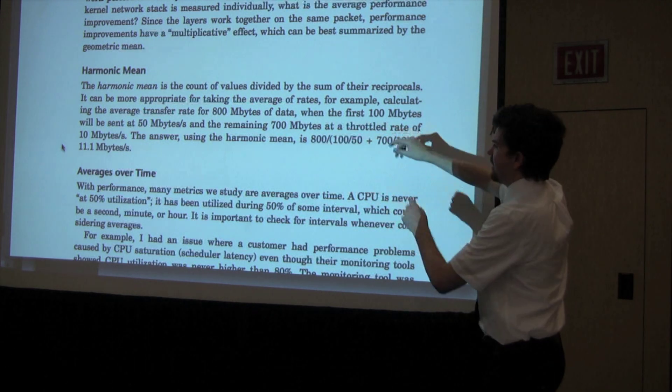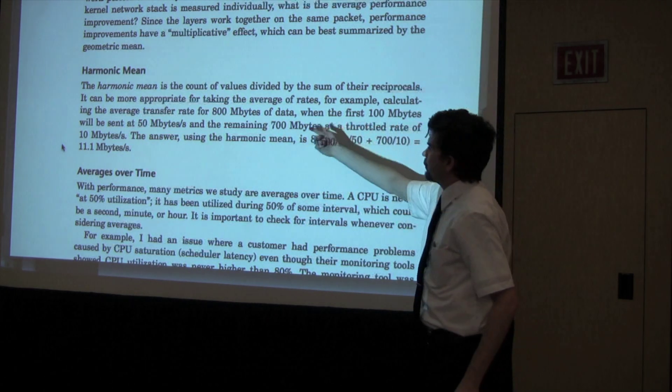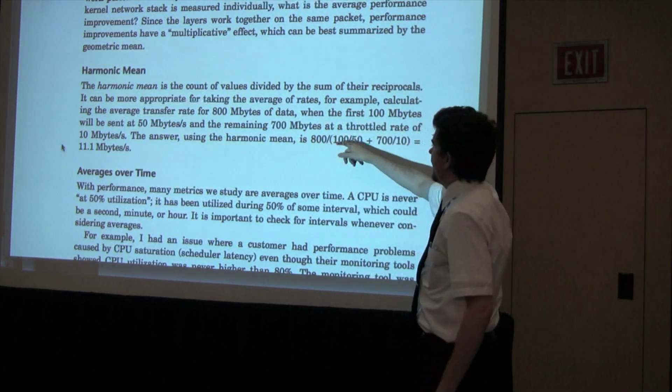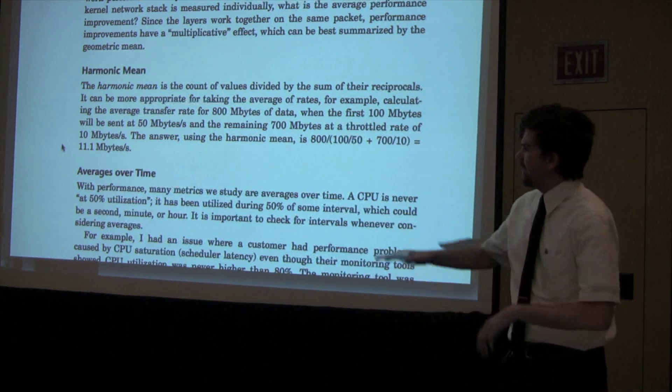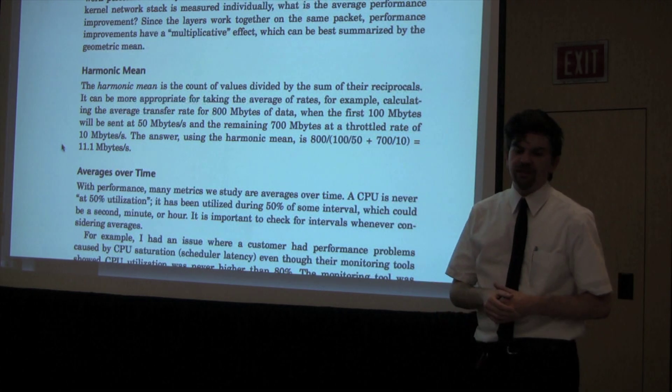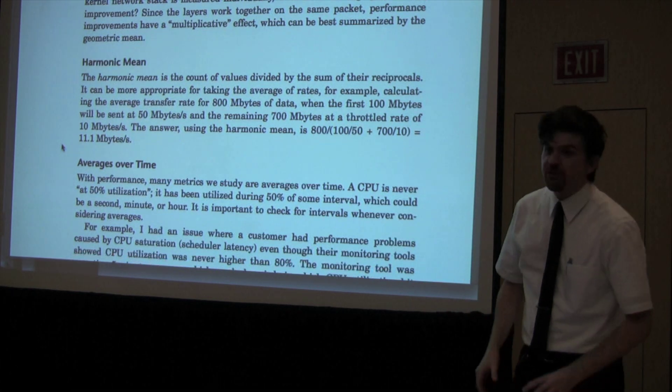A harmonic mean - the example I put here was if you're transferring 800 megs, the first 100 megs will be sent at this rate and the remaining at a different rate. How do you figure out the average rate? So there are particular different types of averages that can help for those sort of calculations.